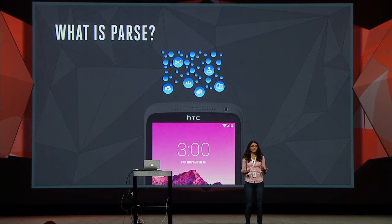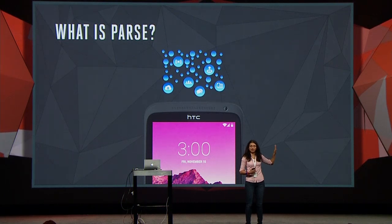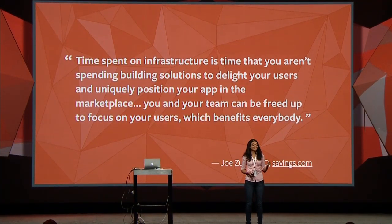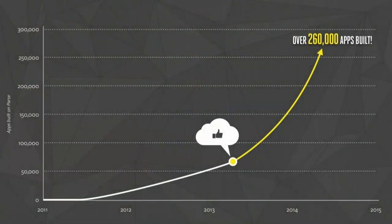People recognize this is something valuable. You can take data generated in your app and, without knowing anything about running servers, store it up in the cloud. Savings.com knows that time spent on infrastructure is time you aren't spending building solutions to delight your users and uniquely position your app in the marketplace. You and your team can be freed up to focus on your users when you use Parse. We've got over 260,000 active apps on Parse, and we've almost quadrupled the number of apps since joining Facebook — pretty impressive growth for us.